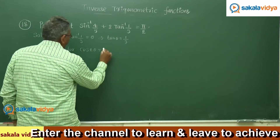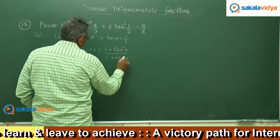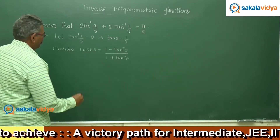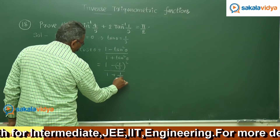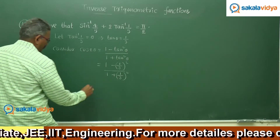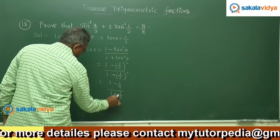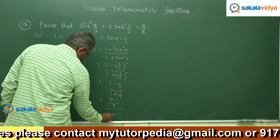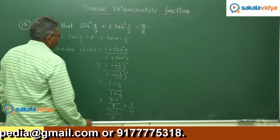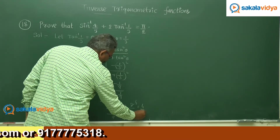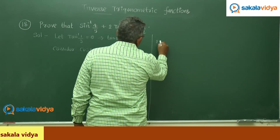Cos 2 theta can be written as (1 minus tan squared theta) by (1 plus tan squared theta). Substituting tan theta equals 1/3: this equals (1 minus 1/9) by (1 plus 1/9). Taking 9 as LCM, this is (9 minus 1)/9 over (9 plus 1)/9. The 9s cancel, giving 8/10, which simplifies to 4/5.